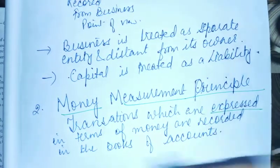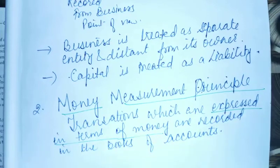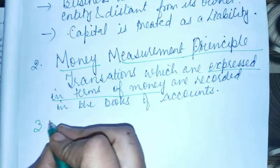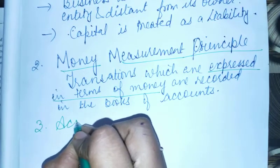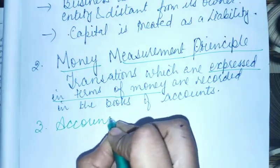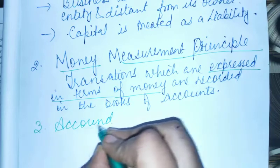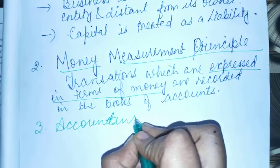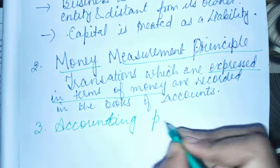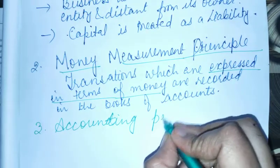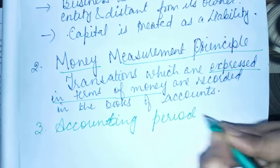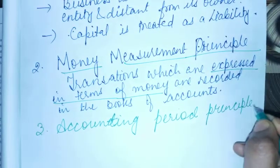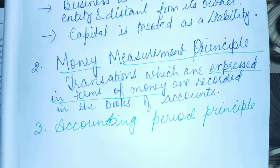The important case: transactions must be expressed in terms of money to be recorded. Third principle is the Accounting Period Principle.